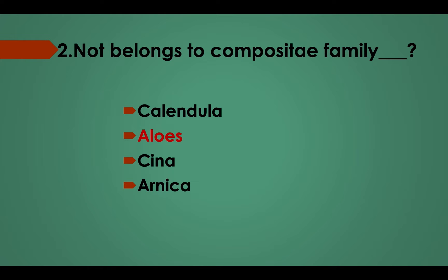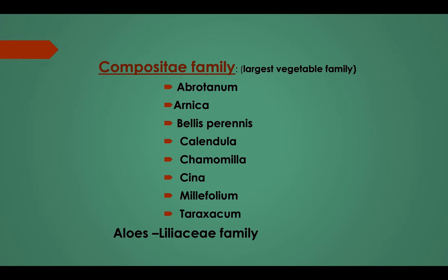Answer: Option B, Aloe. The Composite family is the largest vegetable family and includes Abrotanum, Arnica, Bellis perennis, Calendula, Chamomilla, Cina, Millefolium, and Taraxacum. Aloe belongs to the Liliaceae family.